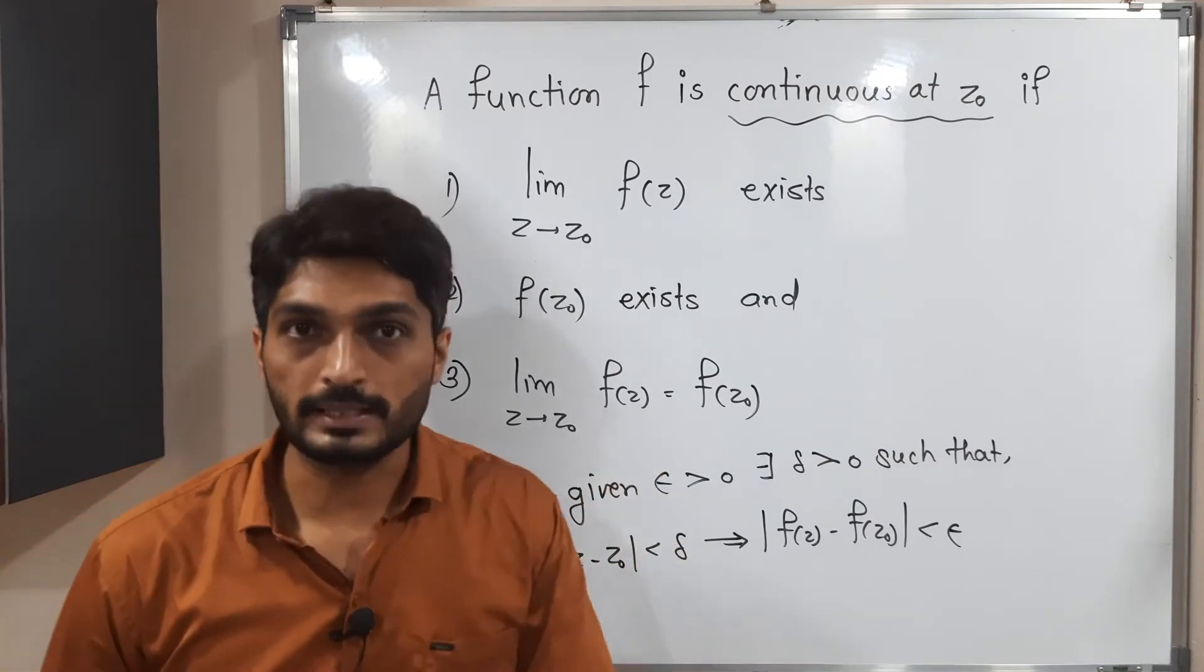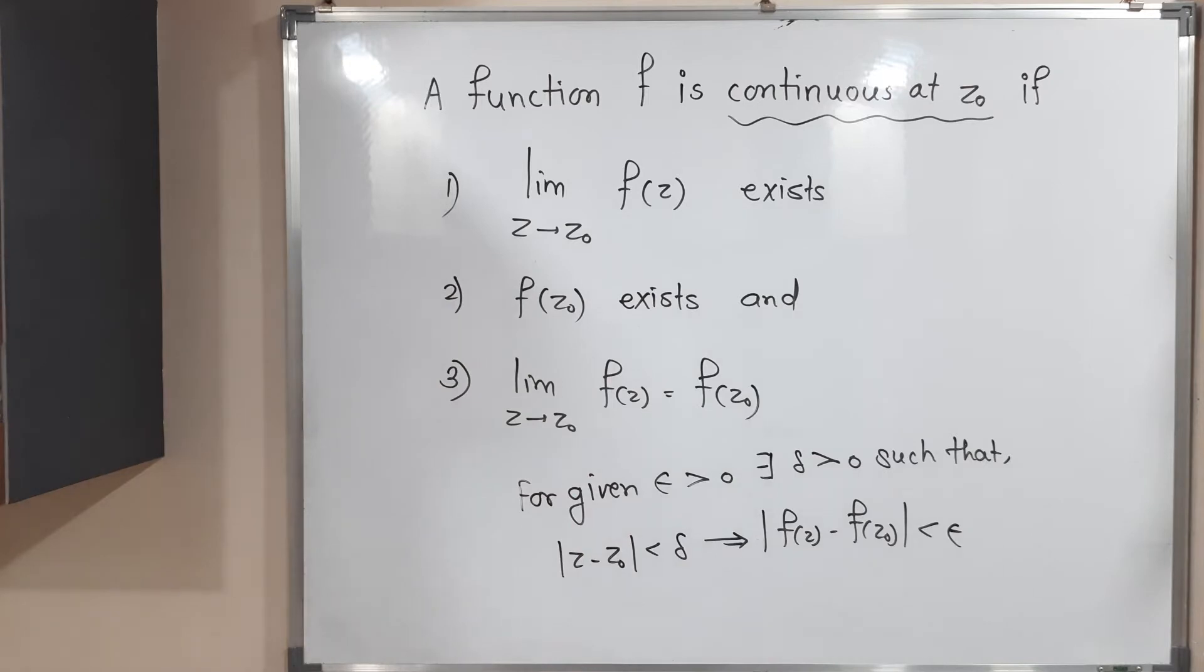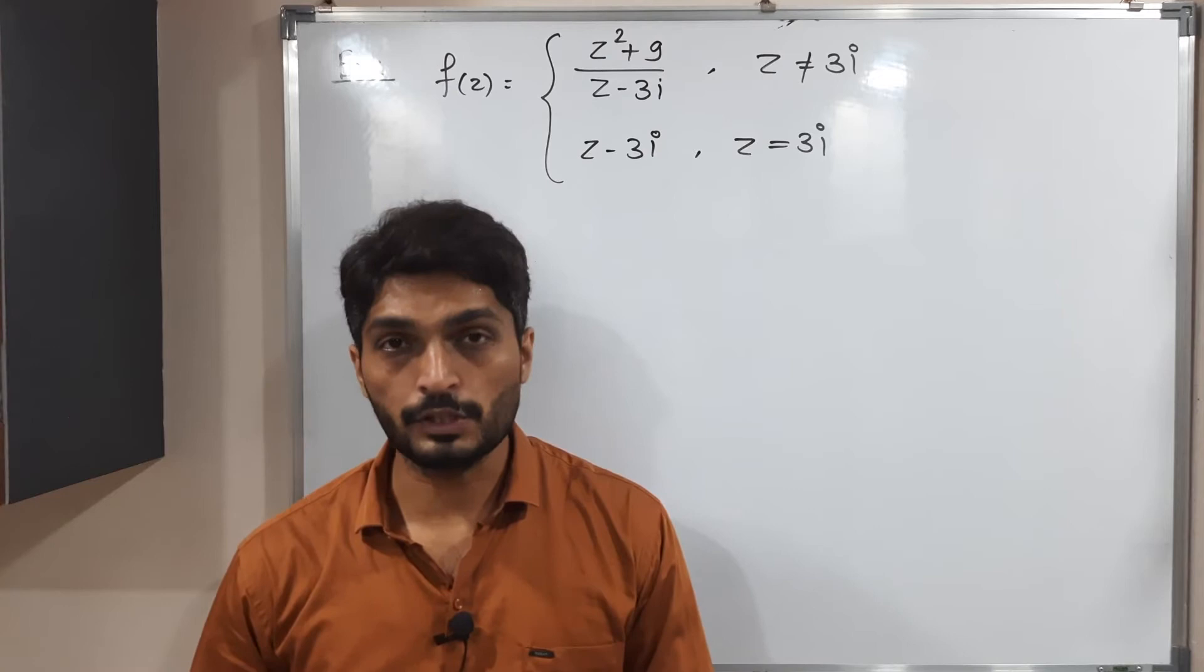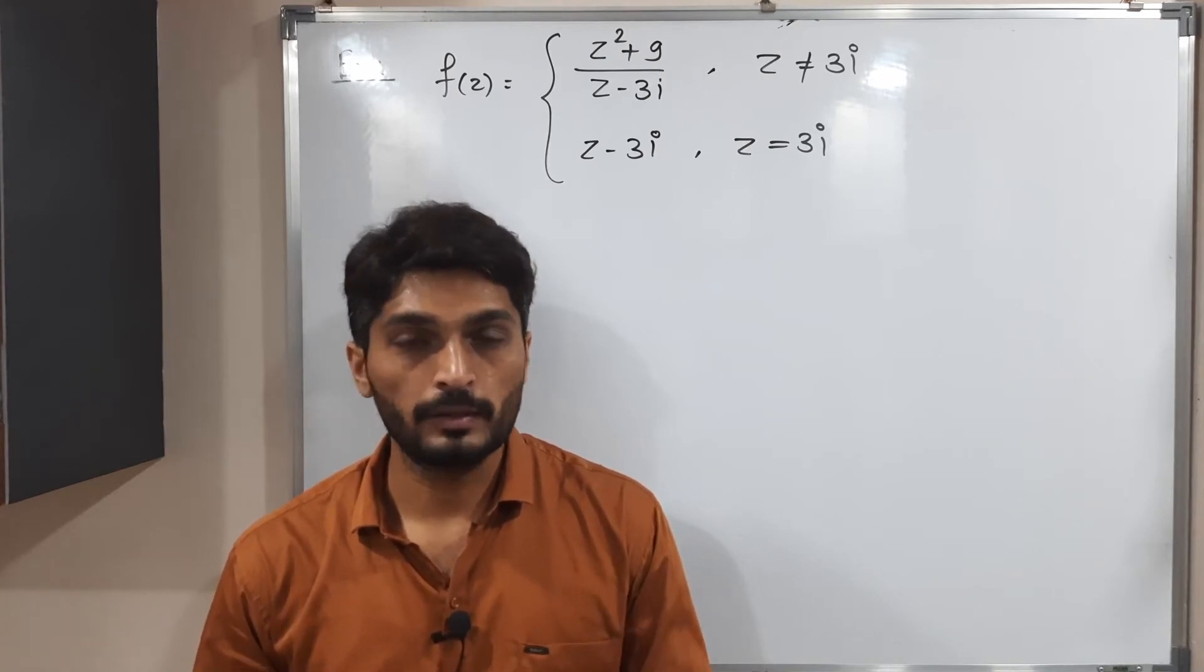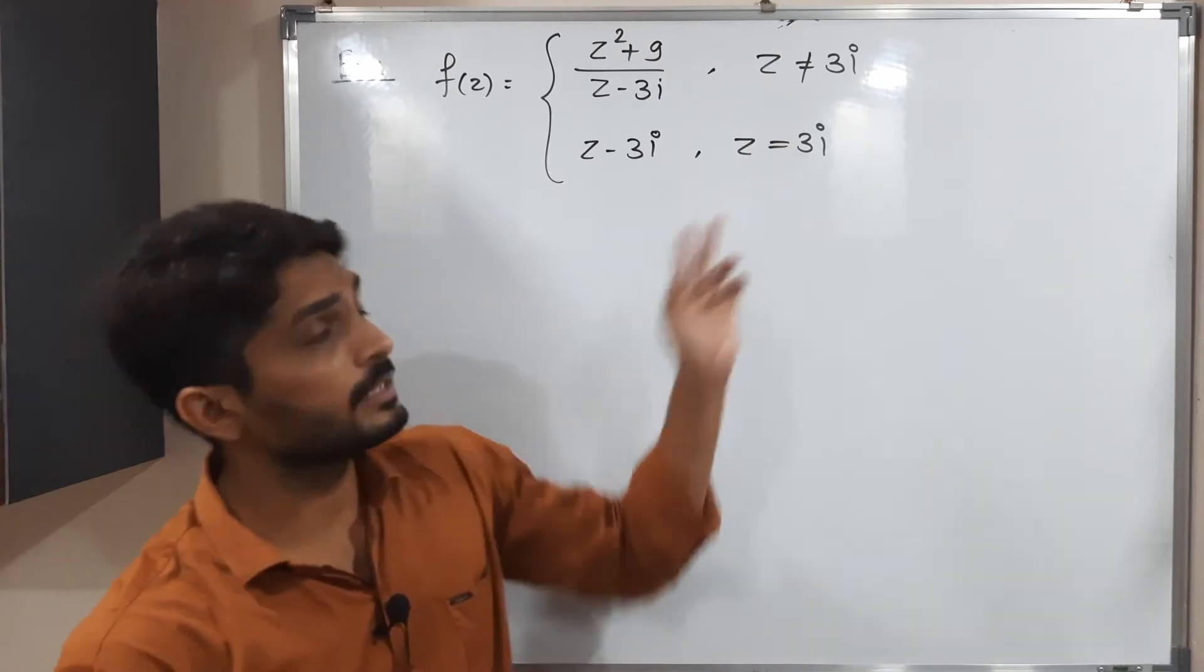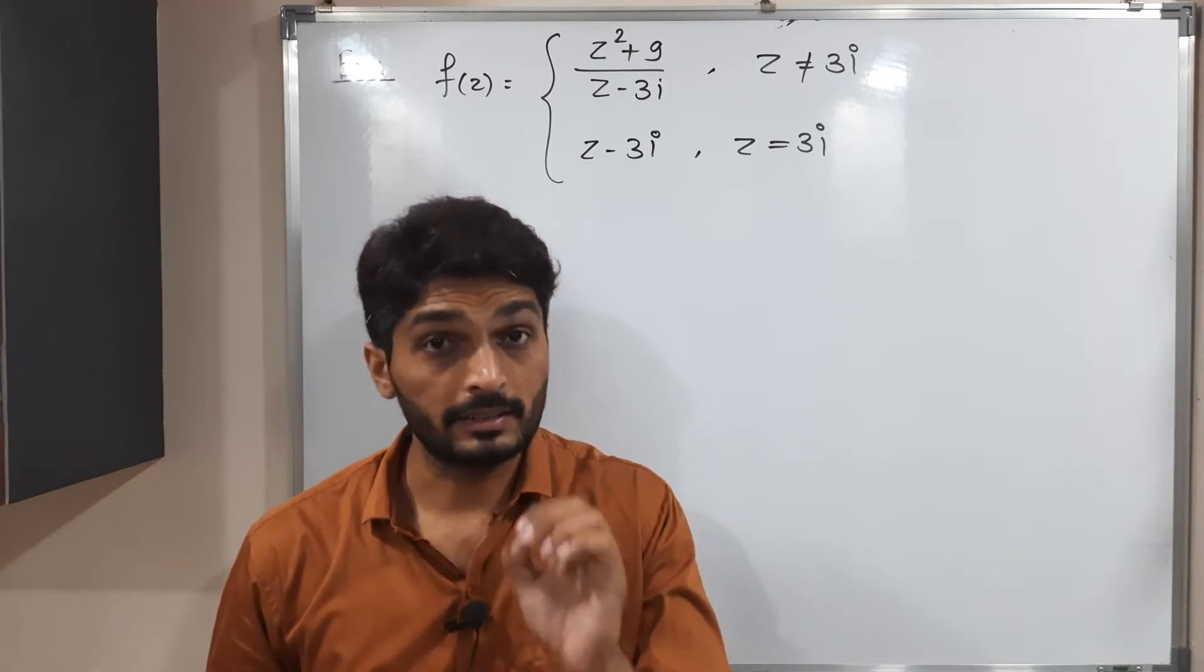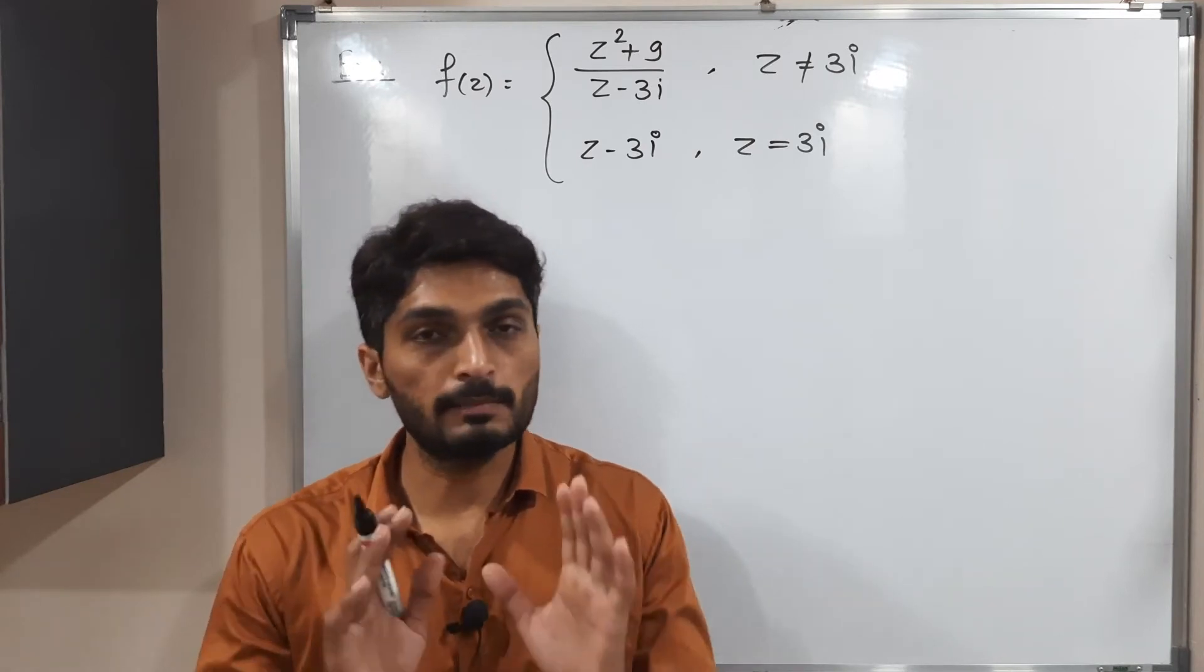Let us discuss one example on that. Make a screenshot of it, then we will go further. Let us discuss this example. We have this function having two different definitions for z is not equal to 3i and z is equal to 3i. We have to check whether this function is continuous at 3i or not. I will simply follow the definition.